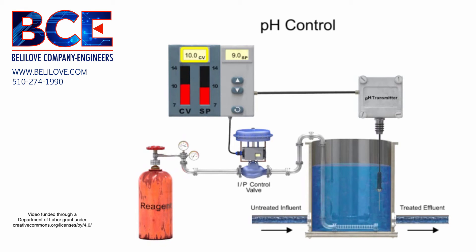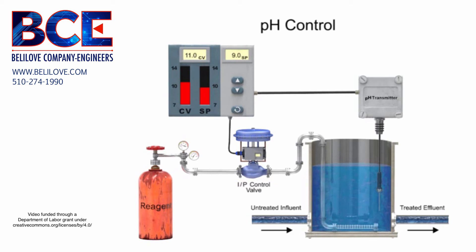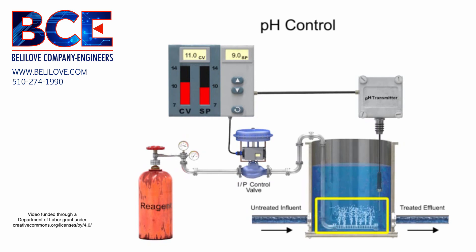If the values are not equal, the controller sends a signal to the control valve that applies carbon dioxide to the tank. The reagent is applied to the tank at varying rates to precisely control the pH level.